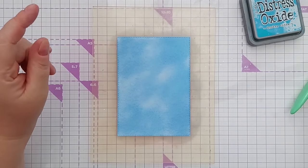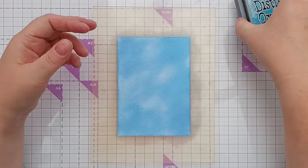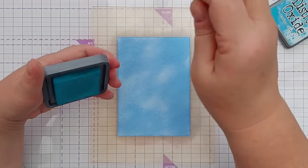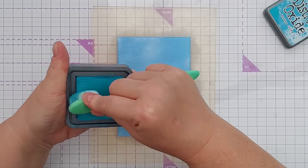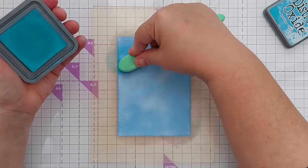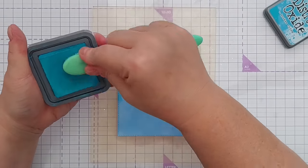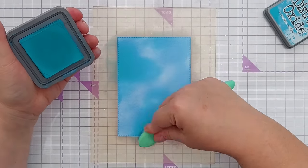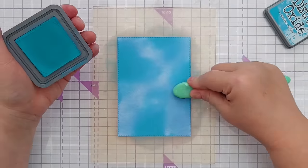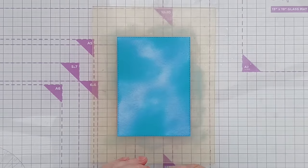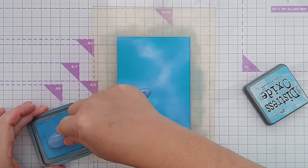I'm not looking for a completely flat blend—I want it to be kind of variegated. So now I've got Broken China, which is a greeny blue or a bluey green, and I'm going to add some of this over the Tumbled Glass. I think I'll come in with a little bit more Tumbled Glass over the top of that.